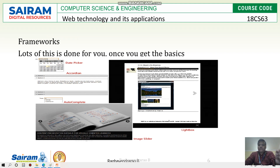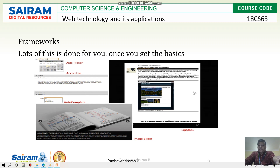Some frameworks are available for this technology, as discussed in the previous module. Here you can see a date picker, validation, and autocomplete — so if you type one character in the search bar, related suggestions automatically get displayed. There is also a slider and image slider you can click through step by step. These are some frameworks that can be built using JavaScript.